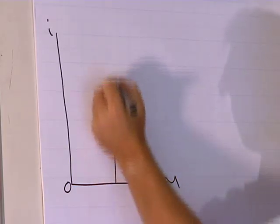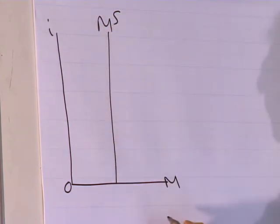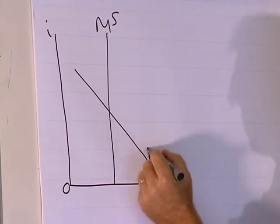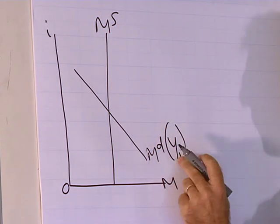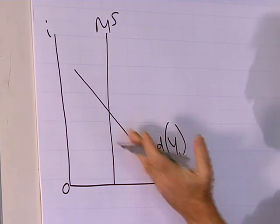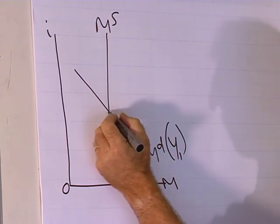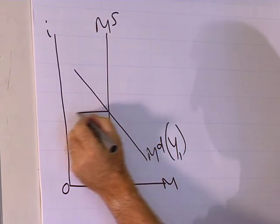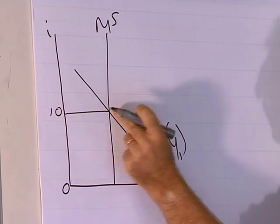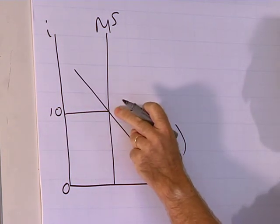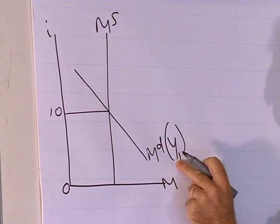The supply of money is determined by the reserve bank. Demand for money is determined by the level of income. The interaction between the demand for money and the supply of money gives us the equilibrium interest rate, say 10%. So the financial market is in equilibrium at the interest rate of 10% for the income level Y1.